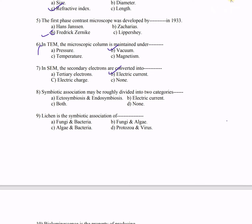Question 8: Symbiotic association may be roughly divided into two categories — A) ectosymbiosis and endosymbiosis, B) electric current, C) both, D) none. The correct answer is option A — ectosymbiosis and endosymbiosis. This was a very simple question.